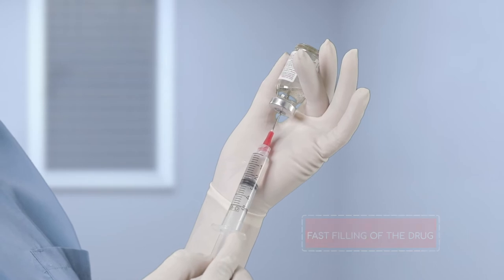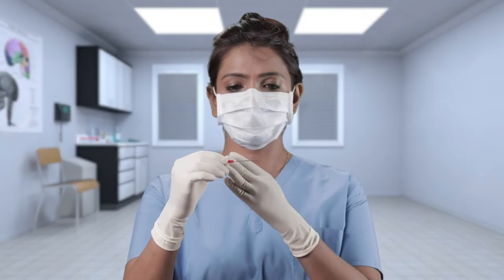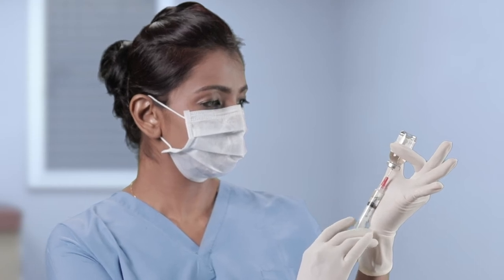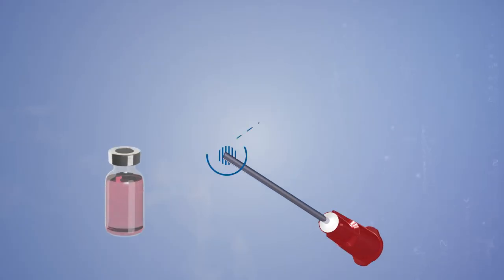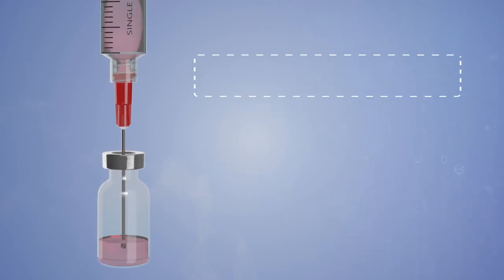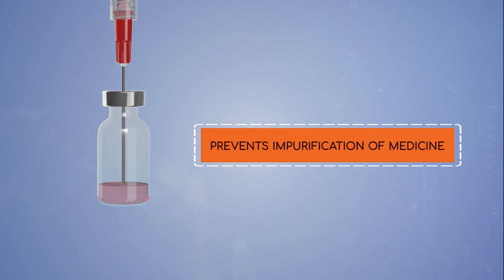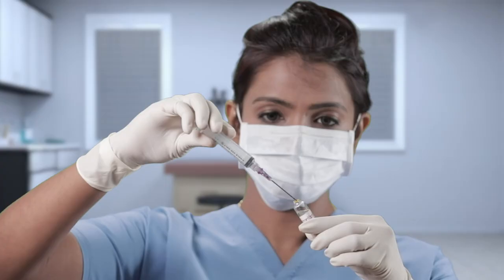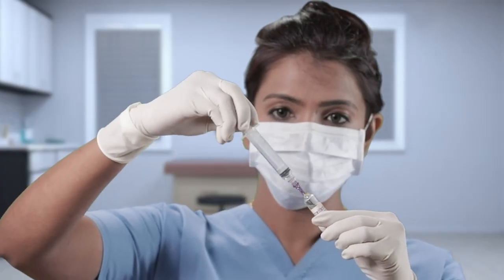Blunt fill needles are used while aspirating the drug from vials with rubber stoppers. The 45-degree bevel cut reduces the chances of coring of the rubber vial stopper and mixing of the vial stopper material with the medication. Similarly, the blunt filter needle is used while aspirating the drug from a glass ampule.